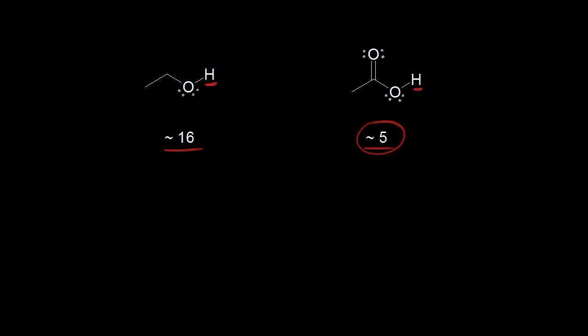We can explain why by looking at the conjugate bases. If ethanol donates this proton, the electrons in this bond — the electrons in magenta — are left behind on the oxygen. So let's draw in the conjugate base. This oxygen would have three lone pairs of electrons, and one of those lone pairs would be the electrons in magenta. That gives this oxygen a negative one formal charge.